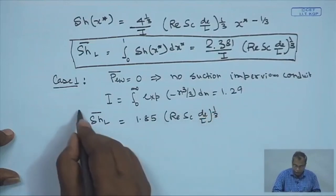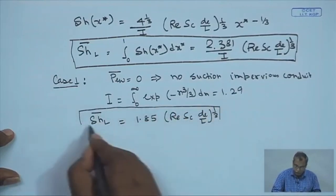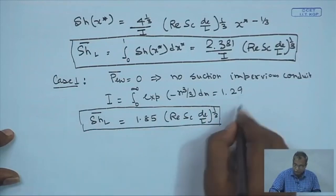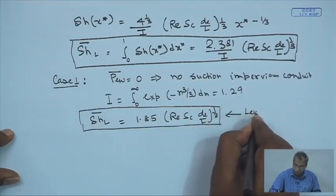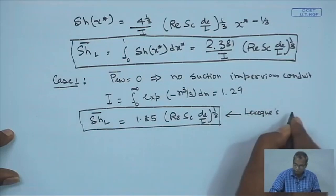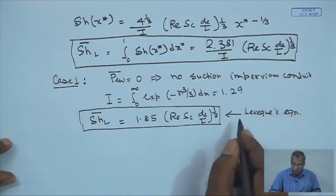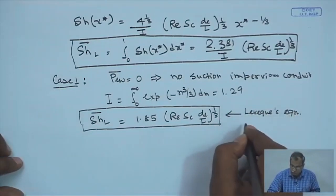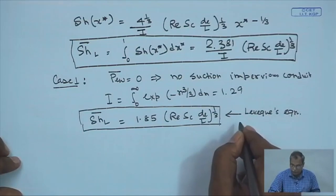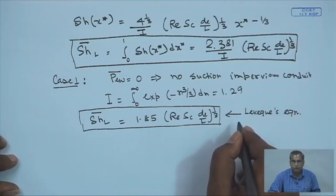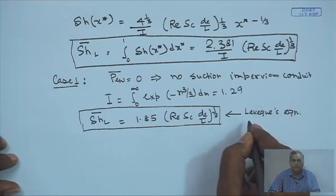This is the expression for the length-average Sherwood number for a membrane channel with porous walls. For Case 1 — P_w = 0 (no suction, impervious conduit) — I₀ = integral from 0 to infinity of exp(−η³/3)dη = 1.29, and the average Sherwood number becomes 1.85·(Re·Sc·d_e/L)^(1/3). This is nothing but the Lévêque equation from heat and mass transfer analogy for an impervious conduit.